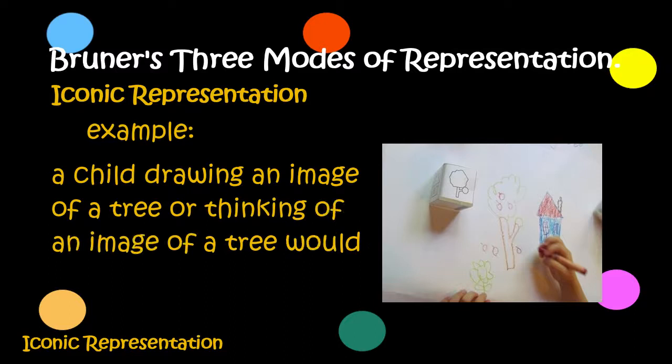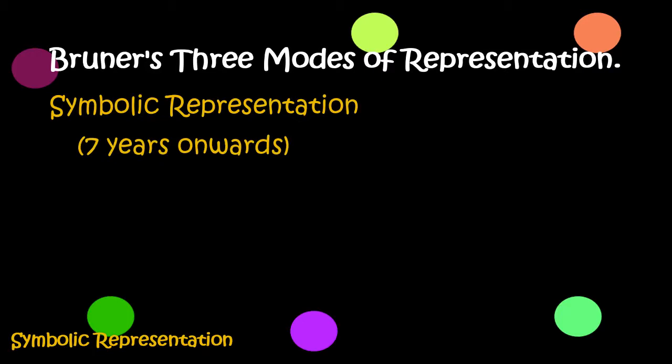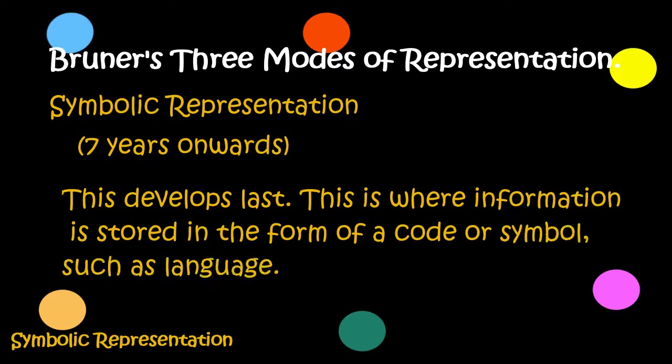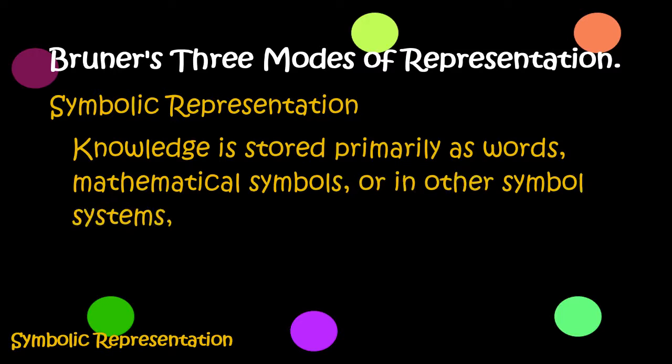Symbolic representation (7 years onwards): this develops last. This is where information is stored in the form of a code or symbol, such as language. Knowledge is stored primarily as words, mathematical symbols, or in other symbol systems such as music.